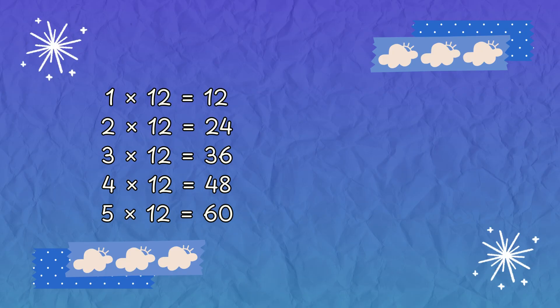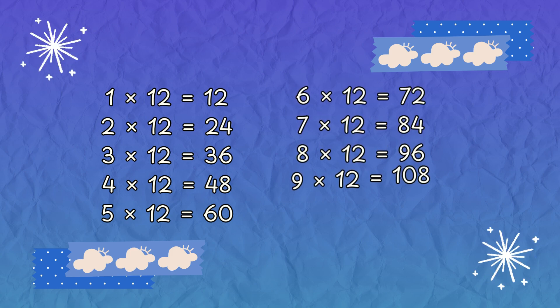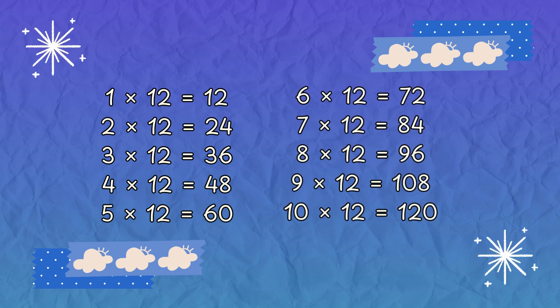Five times twelve is sixty, six times twelve is seventy-two, seven times twelve is eighty-four, eight times twelve is ninety-six.